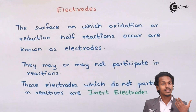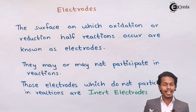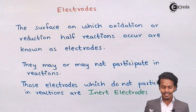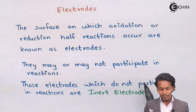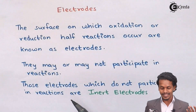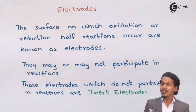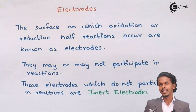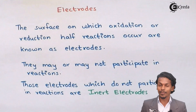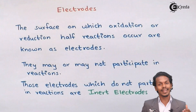Electrodes that do not participate in the reaction within the electrochemical cell are said to be inert electrodes. Based on this, there are different types of electrodes that we are going to talk about.